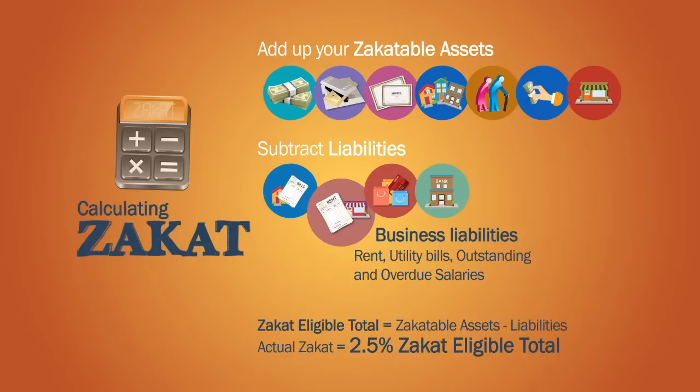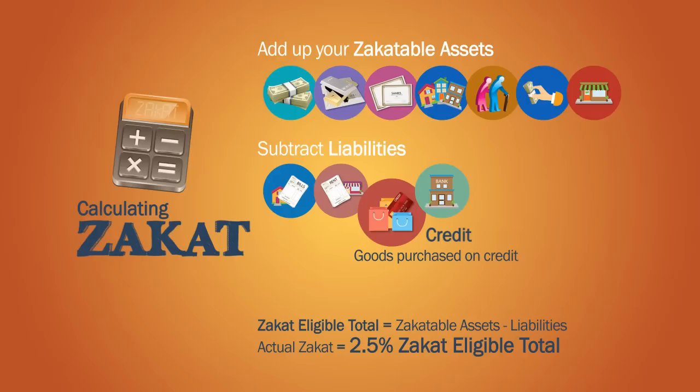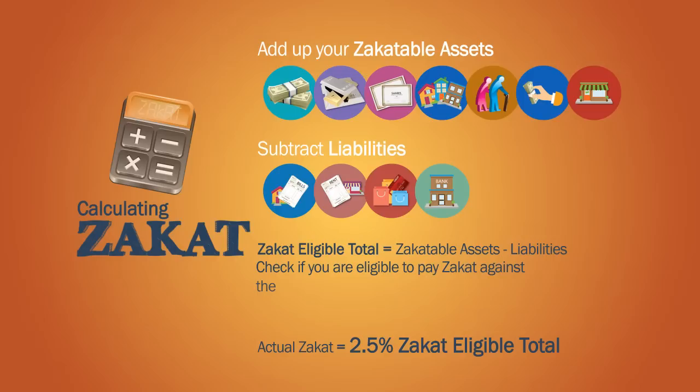Business liabilities, such as rent, bills, outstanding and overdue salaries. Total value of goods purchased on credit. Total value of short-term contract loans and the next year's long-term debt.